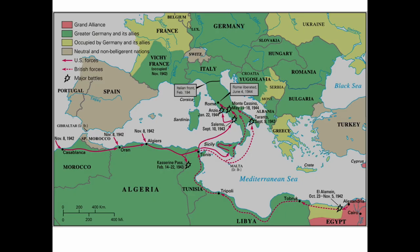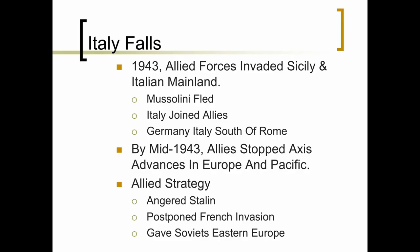Here you see a map of that British-U.S. invasion of the soft underbelly of Europe, across northern Africa, up into Sicily, and then up into Italy. This threatened and ultimately led to the toppling of Mussolini. In 1943, the Allied forces invaded. Mussolini fled Italy but was captured. The Italians then joined the Allies. The King of Italy, who was still on the throne, also joined the Allies.